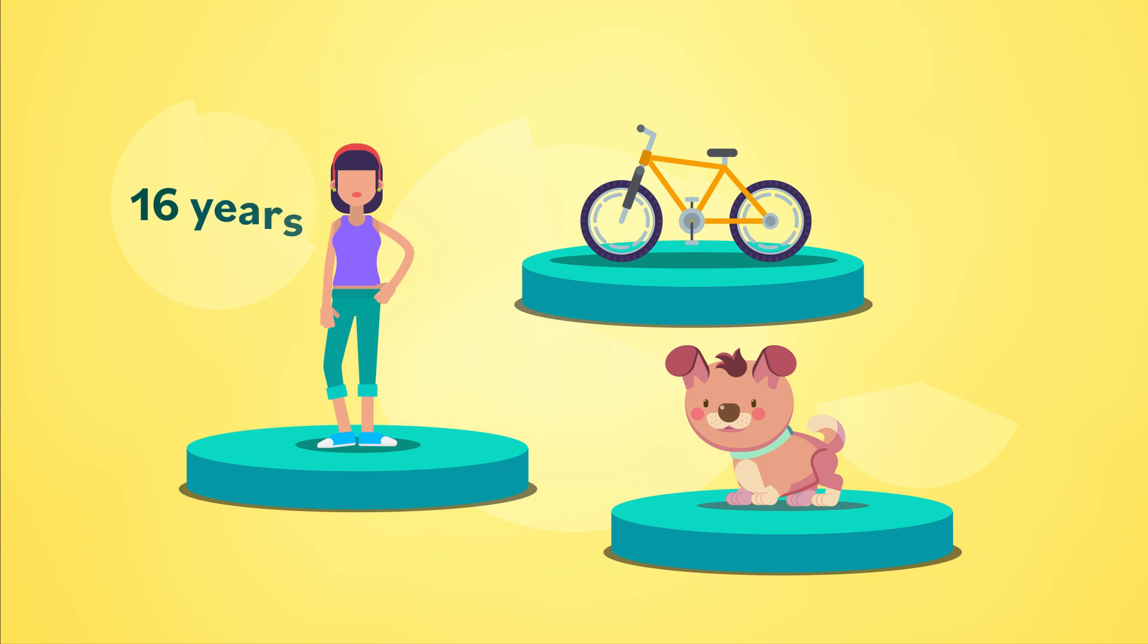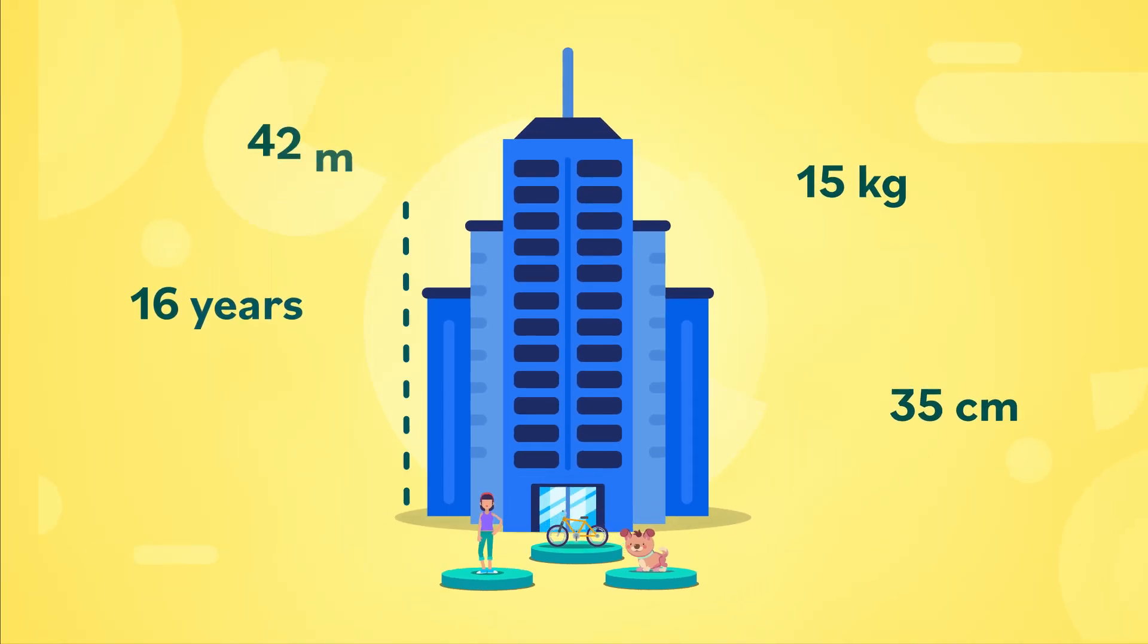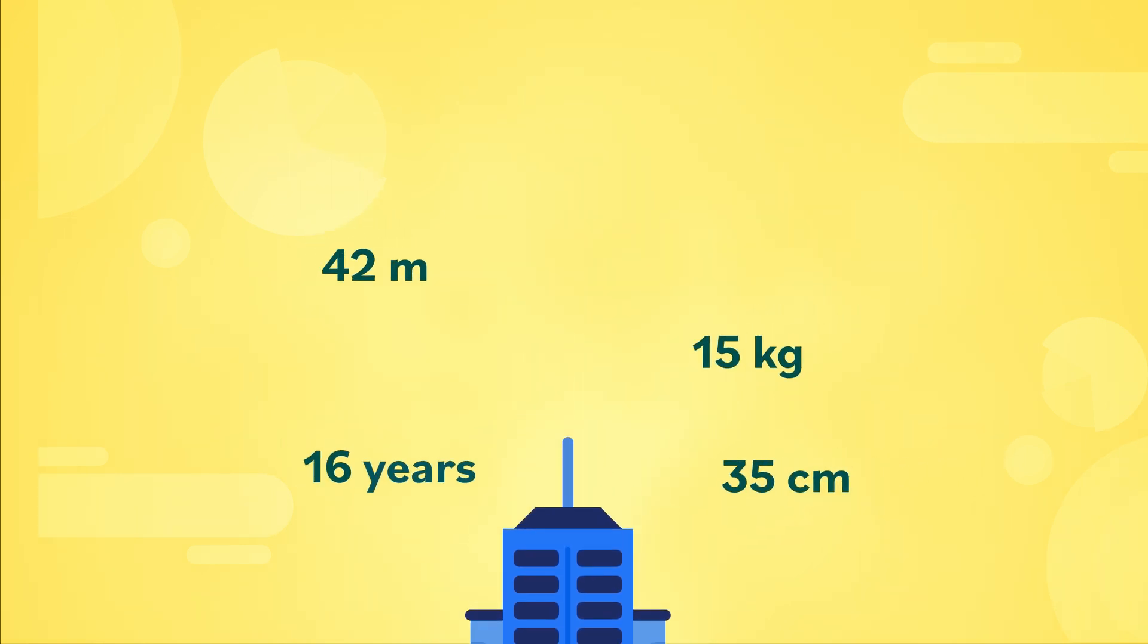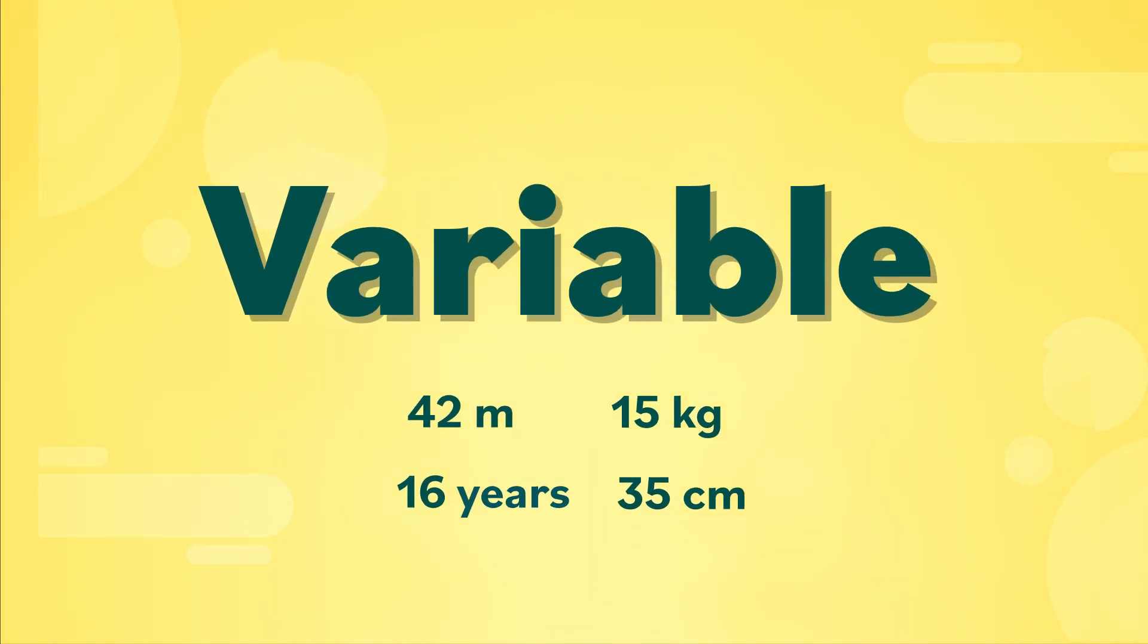For example, age, length, and weight could be variables, even the height of a building. Each of these numbers represents a variable, which can change or take on different values.